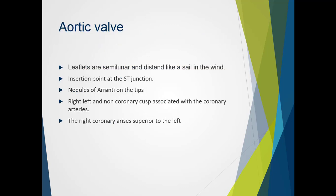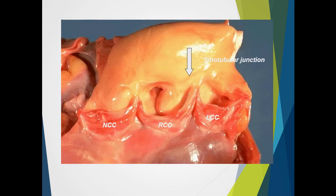The aortic valve leaflets are semilunar, curved in shape, and distend like a sail in the wind when aortic pressure is higher than the LV, pushing the valve closed. The insertion points are at the sinotubular junction level. We have the nodular variety at the very tips of the valves, and the right coronary cusp is associated with the right coronary artery and the left with the left. The right coronary artery arises superior to the left, as we can see in the next slide.